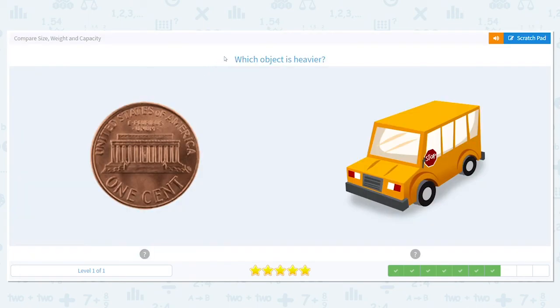Next. Now we're talking about weight. How heavy something is. So, this question says, which object is heavier? So, let's pretend I have a penny and a bus in front of me. Which one of those objects would be heavier? Meaning, I most likely would not be able to pick it up at all.